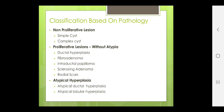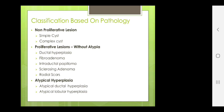Classification is based on pathology. It may be non-proliferative or proliferative. Non-proliferative lesions are simple and complex cysts. Proliferative without atypia includes ductal hyperplasia, fibroadenoma, intraductal papilloma, sclerosing adenosis and radial scars. Atypical hyperplasia may be ductal or lobular hyperplasia.